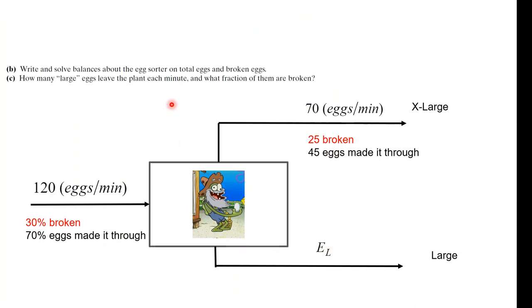So this is our process diagram. Now we can calculate the mass balance on the eggs. Write and solve balances about the eggs, total eggs and broken eggs, how many large eggs leave the plant each minute, and what fraction of them are broken.